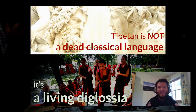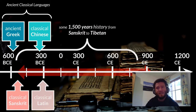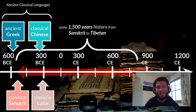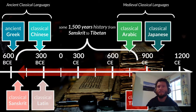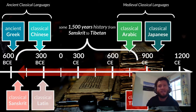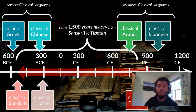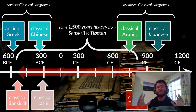When we look at the timeline of Tibetan, classical languages like Latin or Greek are antiquity — they're ancient. But when we're talking about Tibetan, it's a medieval language. Tonmei Samboto was around 650 to 700, somewhere in that area. So it's a lot closer to Arabic or Japanese when we think of classical languages. And that's a really big difference — about 1,500 years.